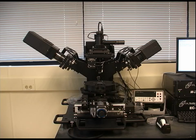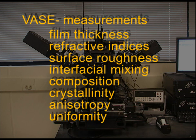Several different properties can be measured using variable angle spectroscopic ellipsometry. Most importantly we can ascertain film thicknesses of samples, refractive indices, surface roughness, interfacial mixing, composition, crystallinity, anisotropy, and also uniformity of different materials.